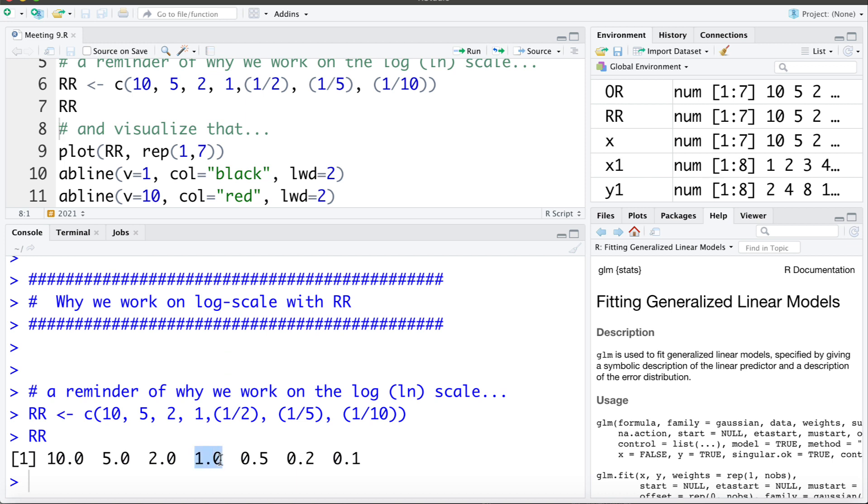One is the null value - the rate of disease for exposed and unexposed is the same. We've talked about how a rate ratio of 2 and a rate ratio of 1/2 are similar. If the rate of disease for the exposed is double that of the unexposed, the rate of the unexposed is half of the exposed. Similarly, rate ratios of 5 and 1/5 are related, as well as 10 and 1/10.